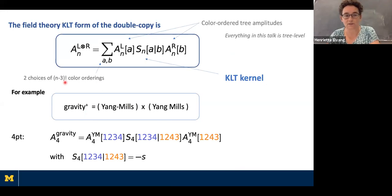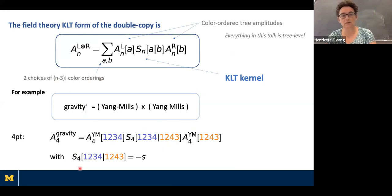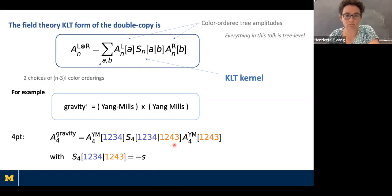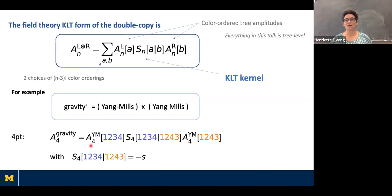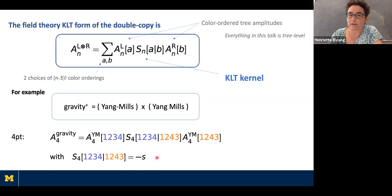At four-point, I pick just one color ordering for A — n minus three factorial is one for n equals four — so I pick the canonical ordering (1,2,3,4) indicated in blue, and in orange I pick B to be (1,2,4,3). This component of the KLT kernel is simply minus the Mandelstam variable S. This is a very familiar form of the field theory KLT formula.